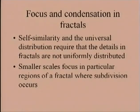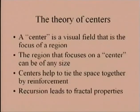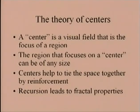The self-similarity and universal distribution in a fractal require that details are not uniformly distributed. That's why there is a focusing in particular regions of the fractal where subdivision occurs — on finer and finer scales, not all over the place. The theory of centers identifies a visual field that focuses on specific regions. The notion of center can be of any size. These centers will tie space together by reinforcement, and recursion used to construct centers on different scales leads to fractal properties.